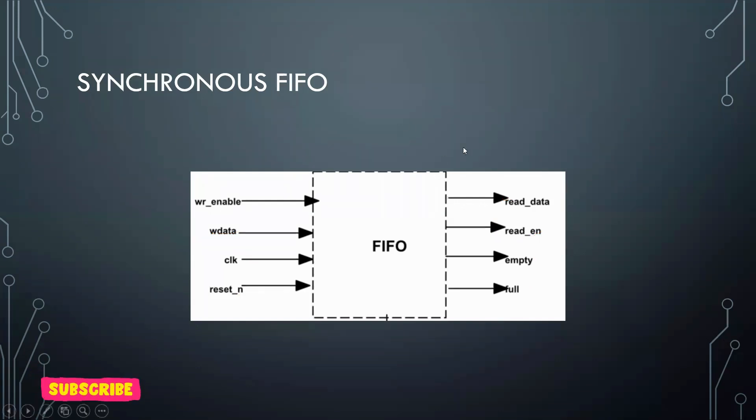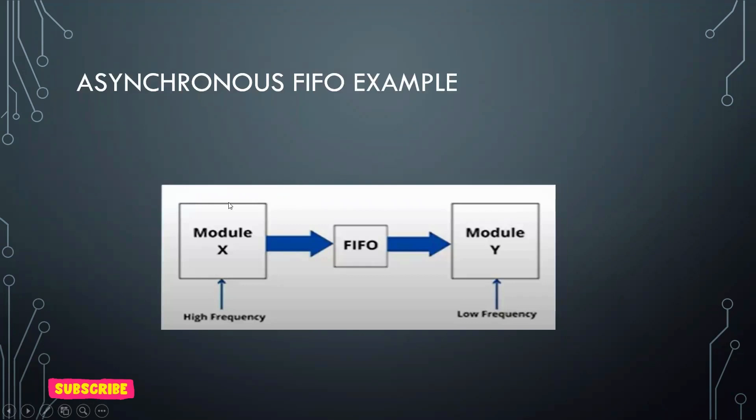If you are talking about asynchronous FIFO, where we can use it. Basically the asynchronous FIFO is used when you are working with two different frequencies. Suppose this is module X working at high frequency and we have another module Y working at low frequency. Module X is writing the data and module Y is reading the data. This is at 200 megahertz and this is at 100 megahertz.